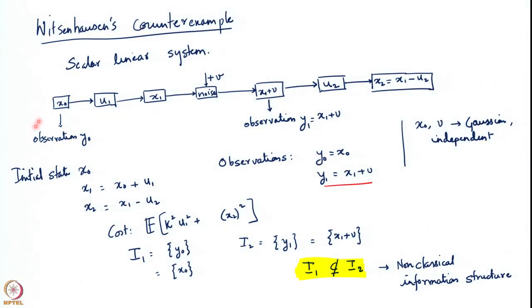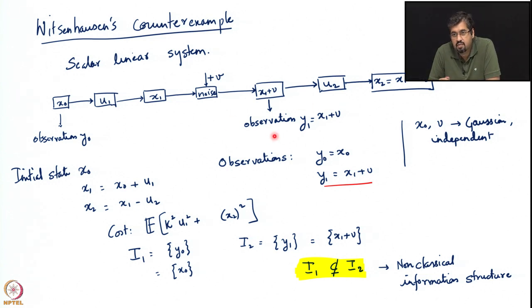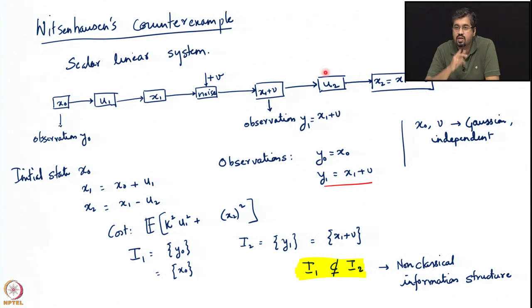This is one more angle to the Witsenhausen problem. It can be interpreted in an entirely different way — from the angle of communication. The field agent can be thought of as a transmitter and the supervisor as a receiver. Alternatively, this can be thought of as an encoder and a decoder. u2 can be thought of as a decoder.